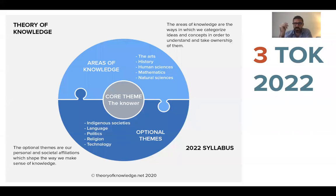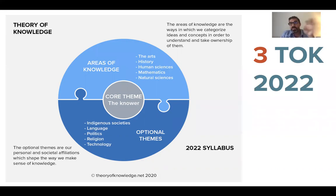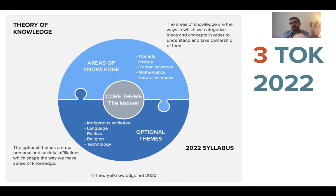The core theme in the middle — knowledge and the knower — is more of a personal thing. Before this webinar began, I had questions about how many optional themes to do and how the areas of knowledge relate to each other. We are meant to get through all the areas of knowledge, do two optional themes, and cover the core theme. But since I began teaching in this question-based way, I've been trying to get away from the shopping list approach, without sacrificing depth of understanding of the fundamentals of each aspect of the course.